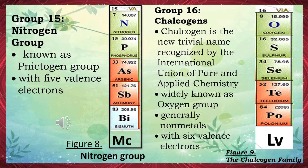Group 15 — Nitrogen group, known as the pnictogen group, with five valence electrons. Nitrogen group members: nitrogen, phosphorus, arsenic, antimony, bismuth, and moscovium.